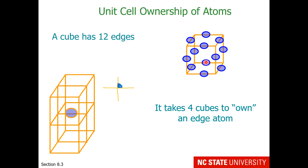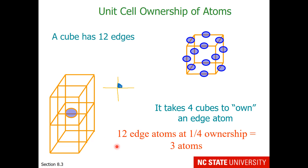So if we were to count what portion of atoms were actually inside the volume of the unit cell, there are twelve edge atoms, and each one of them has one quarter ownership, so there are three total atoms inside the unit cell.